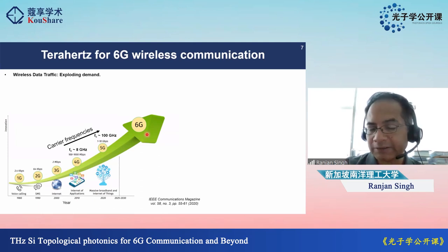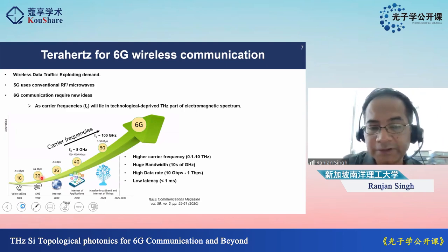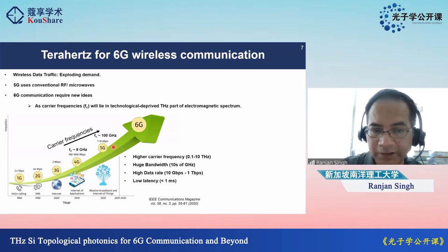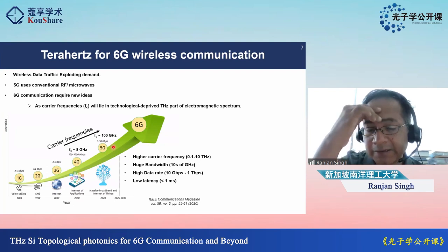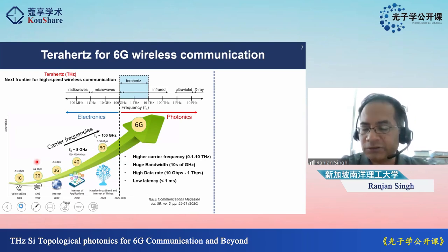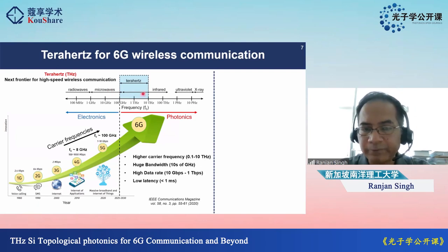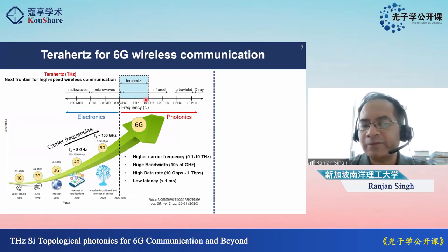Electronics becomes extremely lossy above 100 GHz. Up to 100 GHz, conventional microwaves are fine, but above 100 GHz you see challenges — power amplifiers are no longer efficient, and the power of electronically generated signals is not high. Therefore, ideas from photonics could be helpful. Terahertz sits right between electronics and photonics, sharing the advantages and disadvantages of both communities.